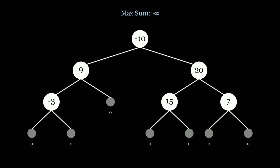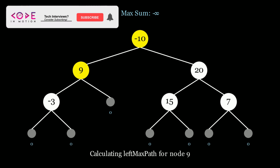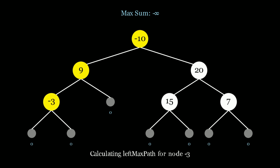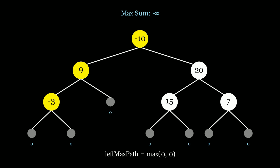Let's start the main algorithm. We have a global max sum counter initialized to negative infinity. We start by scanning node negative 10 and need to calculate the left max path sum, so we go to node 9. At node 9 we again need the left max path, so we go to node negative 3. At negative 3 we need the left max path, so we go to null — this is our first base case. The maximum path sum for a null node is 0. So the left max path at negative 3 is the maximum between 0 and 0, which is 0.